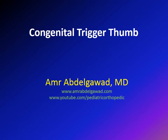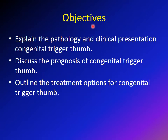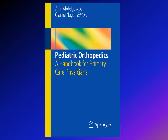In this lecture we're going to speak about congenital trigger thumb. The objectives are: first, to discuss the pathology and clinical presentation; next, to speak about the prognosis especially in relation to age of presentation; and last, to speak about treatment options. A good source is the Pediatric Orthopedic Handbook for Primary Care Physician, written by myself and Dr. Naga.